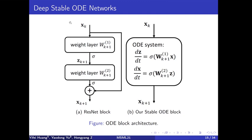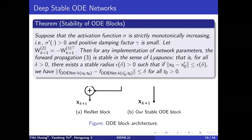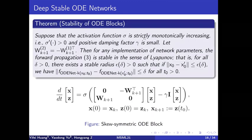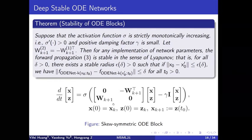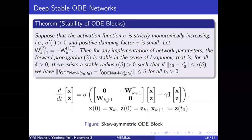The theorem on stability of ODE blocks states: suppose the activation function sigma is strictly monotonically increasing and the positive damping factor is small. Let the second weight matrix be the negative transpose of the first weight matrix; then for any instantiation of neural parameters, our ODE system is stable in the sense of Lyapunov. Concretely, this matrix is the negative transpose of the other.